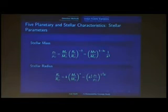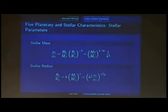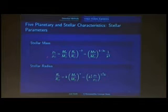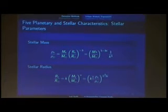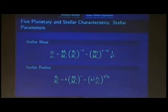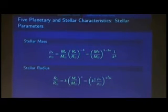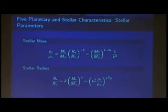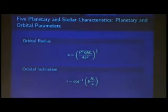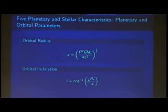Here are the stellar characteristics. This is the stellar density that we derive as one of our parameter combinations, and then we can express the stellar mass as a function of this, where x and k are just constants. Similarly, the orbital radius and orbital inclination are more intuitive because they take advantage of the geometry of the orbit.